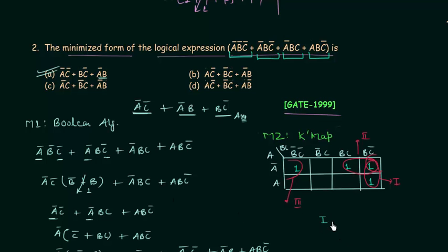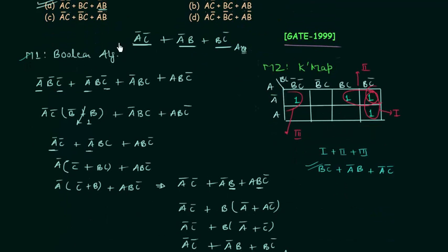From the first pair we get BC', from the second pair A'B, and from the third pair A'C'. The result is the same as with Boolean algebra. The only difference is the method — the K-map is much easier and less time consuming compared to the Boolean algebra method.